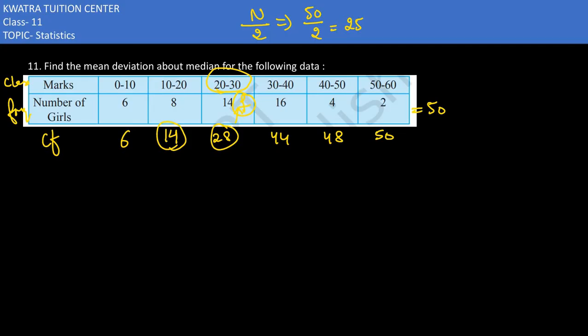What is our median? The median is 27.8. xi: 0 and 10, the midpoint is 5. 10 and 20, midpoint is 15. 20 and 30, midpoint is 25. 30 and 40 is 35. 40 and 50 is 45. 50 and 60 is 55. Next value is |xi minus median|.